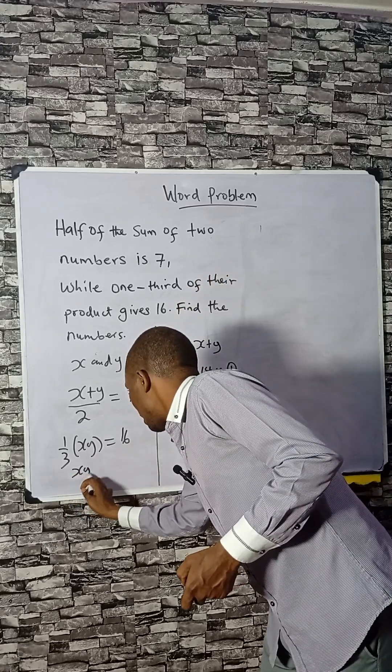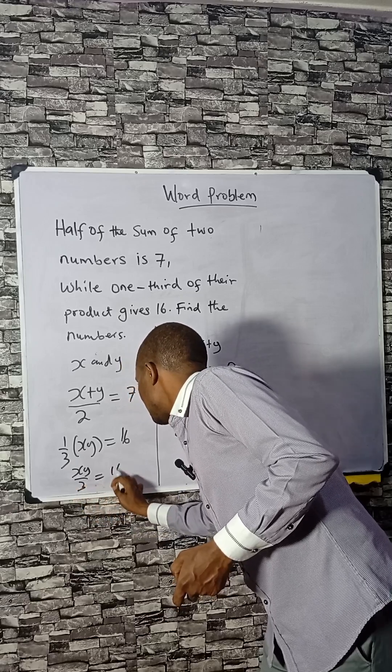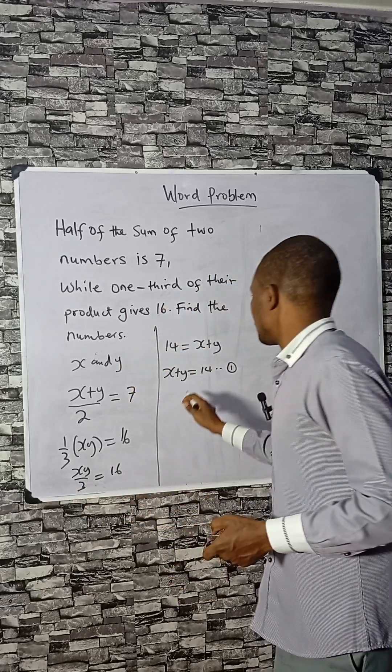Equation 1 is one over 3, which is x times y divided by 3 equals 16. So 3 times 16 is 48.